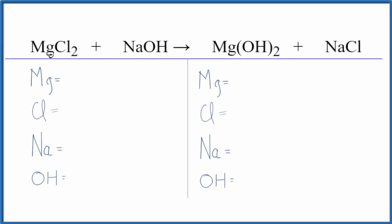In this video, we'll balance the equation for MgCl2 plus NaOH. This is a double displacement reaction, the Mg and the Na, they switch places.